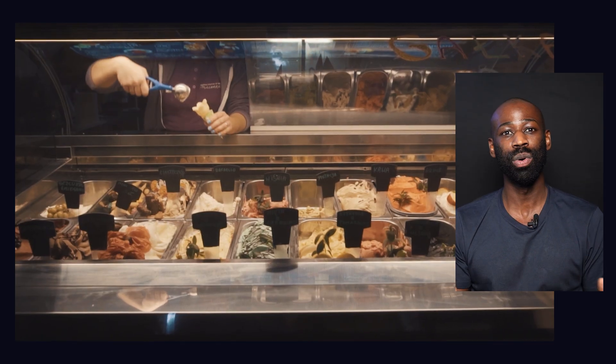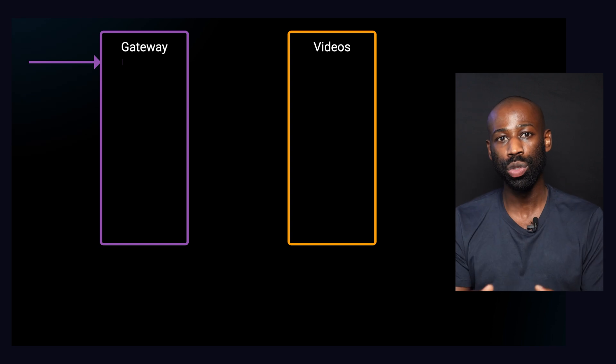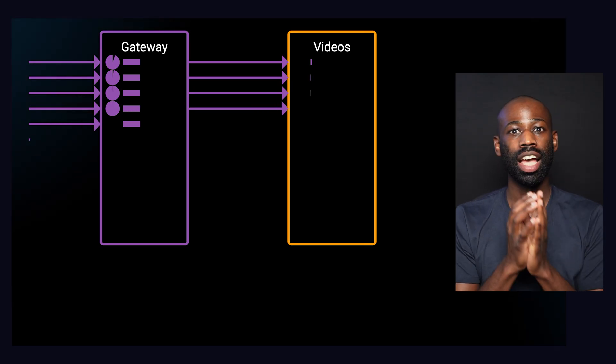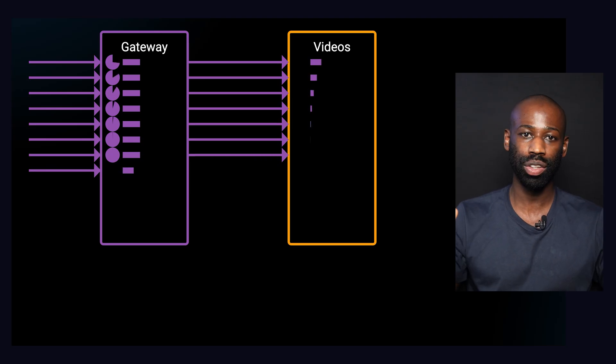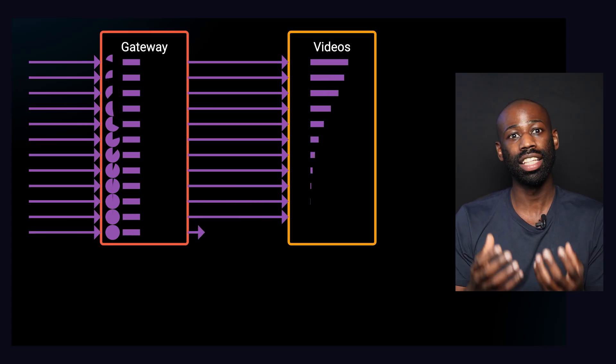Now suppose in your ice cream shop you get a daily delivery of a hundred ice creams but only manage to sell 10 a day. Even if you throw away expired ice cream to make space, there is a point where you will completely run out of space in your freezer. The same applies to the gateway: if many users are sending requests and the gateway forwards them to the video service while waiting for a response, and the video service is slow, requests will keep piling up. Even with timeouts in place, there is a point where the gateway will simply run out of resources and be unable to handle any new incoming requests, making your entire system totally unavailable — even for requests completely unrelated to video. All of that because of one slow service. So timeouts are a good start, but they are not enough.